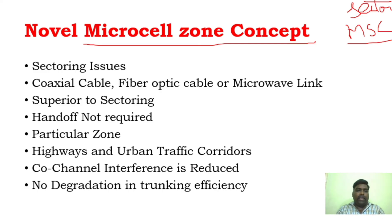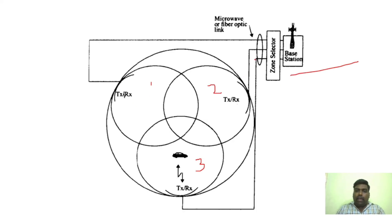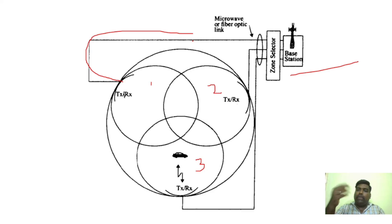In the microcell zone concept, zones are created. You can see in the diagram: zone one, zone two, zone three. These three zones make up one cell. All three zones are connected to a single base station, and they can be connected using coaxial cable, fiber optic cable, or a microwave link. All zones share the same radio equipment.